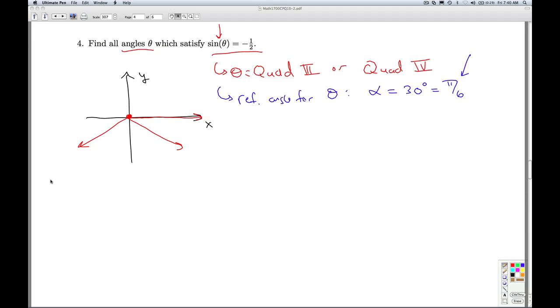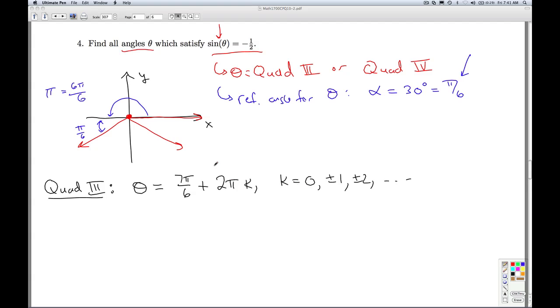So for the quadrant 3 angle case, what can theta be? Well, what's one quadrant 3 angle with a reference angle of pi over 6? Well, I start and go halfway around. Halfway around in radian measure is pi, which is 6 pi over 6. So I go an extra pi over 6. This gives me 7 pi over 6. And then, of course, any angle coterminal with that will also have a sine of negative 1 half. So we add multiples of 2 pi, where k, once again, is an integer. So this completely describes all quadrant 3 angles whose sine is negative 1 half. Each of these angles have a reference angle of pi over 6, which means their sine is going to be negative 1 half.